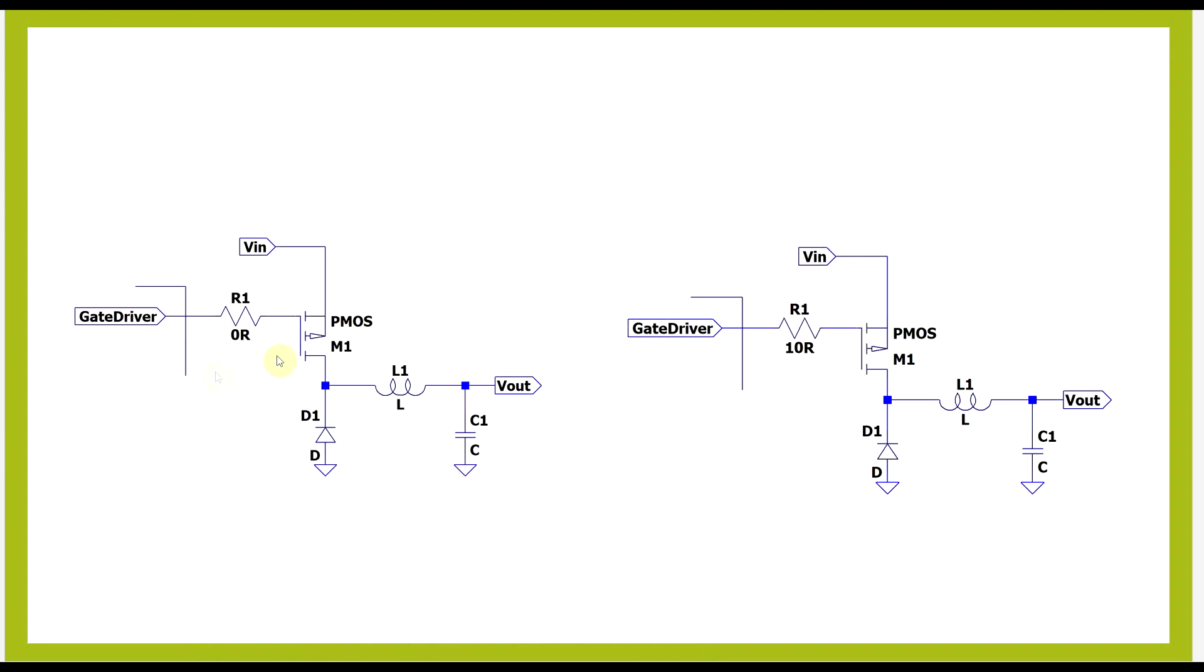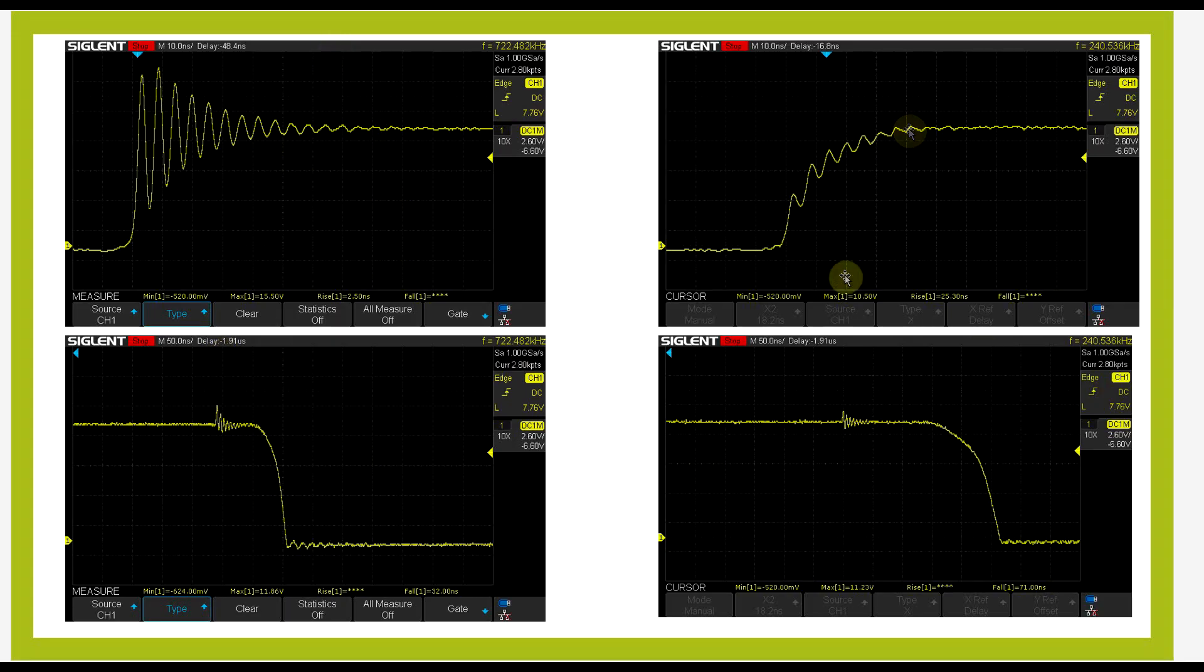So, in one setup I'm using a 0 ohm gate resistor, whereas in the other setup I'm using a 10 ohm gate resistor, so everything else stayed the same. And well, by measuring these two setups, so on the left side we have the 0 ohm, on the right side we have the 10 ohm. First of all, the slope ended up changing on both of the transitions,